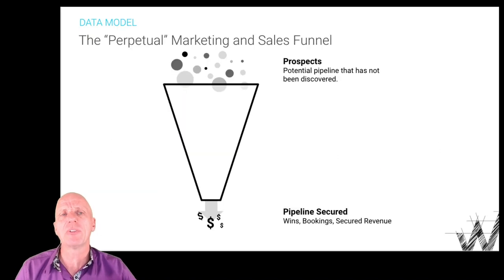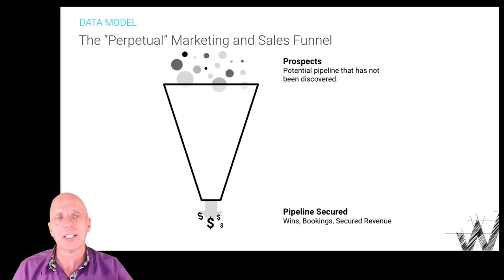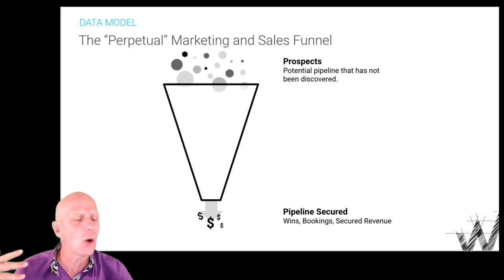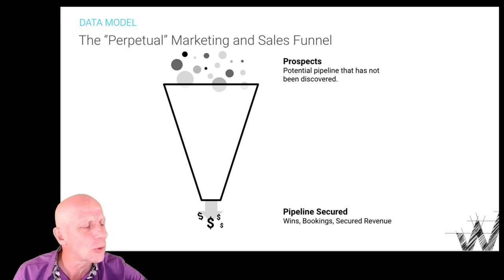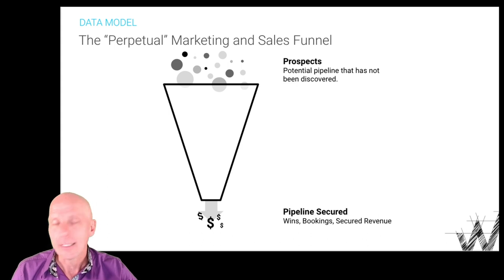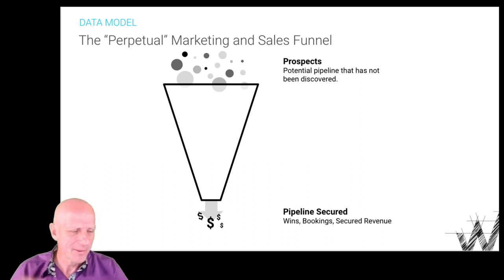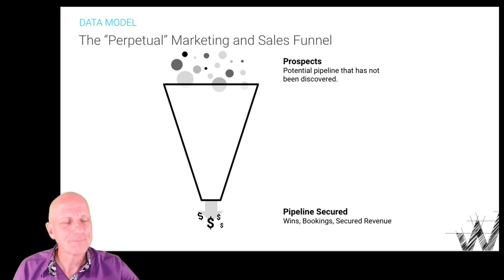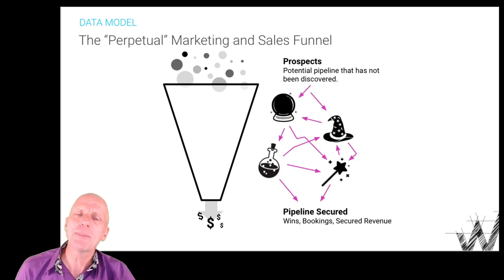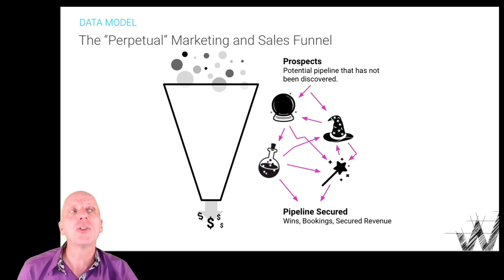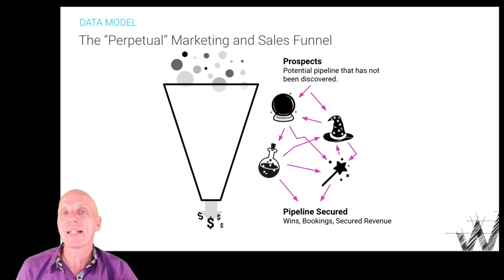I want to share with you some of these changes that have occurred over the past years. What we see in this data model is that historically we used a funnel — this funnel that all of you know. It's a little bit historic. And what we see in this model is that it's being put together by crystal ball sages; it feels like wizardry. This wizardry is applied to different parts, using some magic to turn prospects into pipeline.